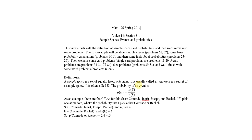Greetings to you all. We're back with video 17, Section 8.1, Chapter 8, Dealing with Sample Spaces, Events, and Probabilities. We'll talk a little bit about the definition of a sample space and probabilities, and then we'll do some problems. First example will be about sample spaces, problems 61 and 62, and then some basic probability calculations like problems 1 through 10, and some facts about probabilities, problems 23 and 26. Then some card problems — single card problems are 11 through 20, five card problems are 31 through 34 and 77 through 84, some dice problems 39 through 54, and we'll finish with some word problems.